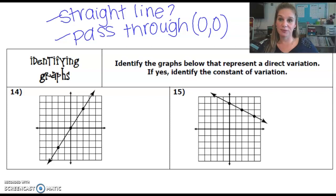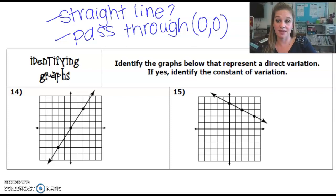For question number 14, the first thing you would ask yourself is does this graph represent a straight line, and it looks pretty straight to me. And then you also need to ask does it pass through zero zero or the origin, and yes it actually does. So this graph does represent direct variation, so I'm going to say yes.